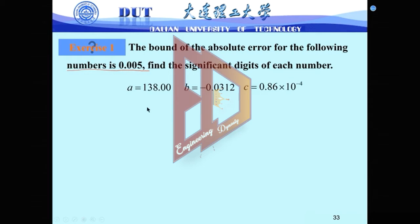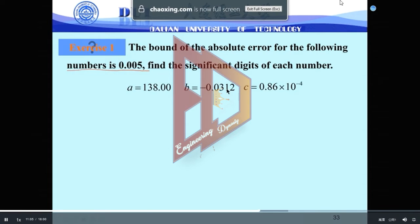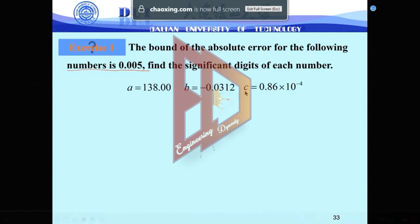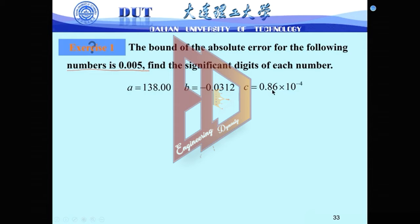A equals 138, B equals minus 0.0312, and C equals 0.86 multiply 10 to the 4. Now you see, we don't know what are the exact values.